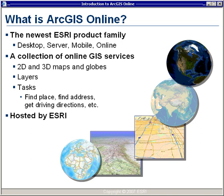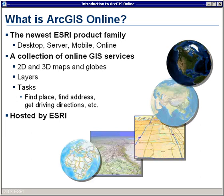ArcGIS Online is the newest ESRI product family. It joins the desktop, server, and mobile product families. It's a collection of online GIS services, which include 2D and 3D maps and globes, layers, and functional services, which we call tasks. All of these online GIS services are hosted by ESRI and are available to you whenever you're connected and online.